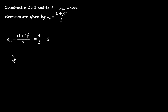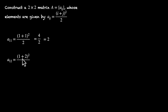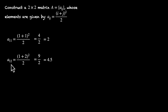Pause the video and try figuring out the rest of the elements. Let's find them together. A12: plug in i equals 1 and j equals 2. So (1+2)² divided by 2 is 3 squared, 9 divided by 2, that's 4.5. So the second element in the first row, A12, is 4.5. With this, we're done with row 1.